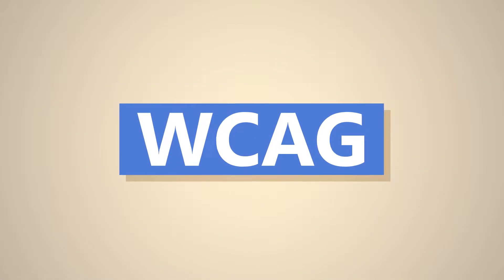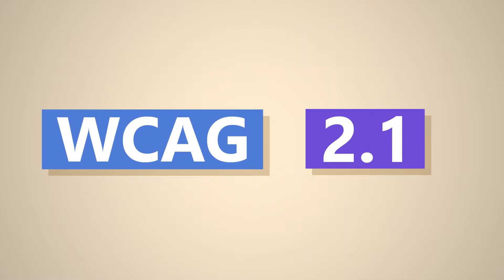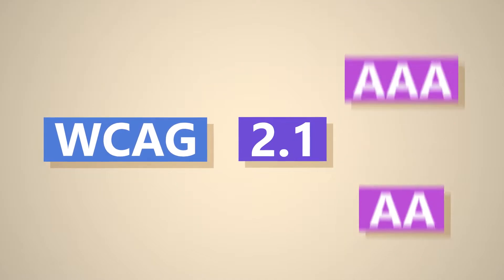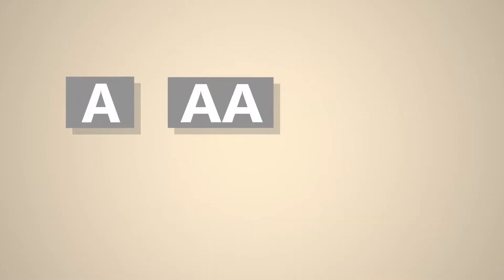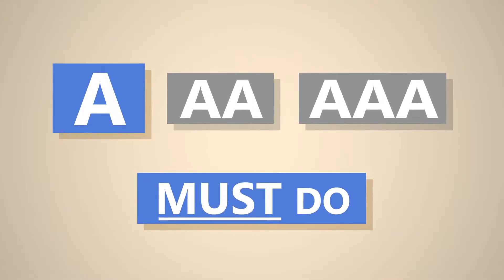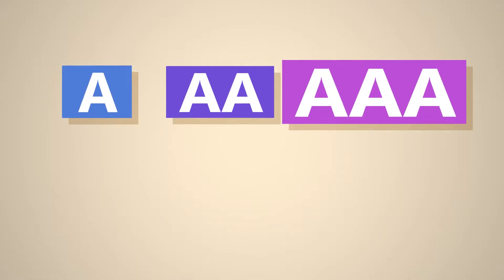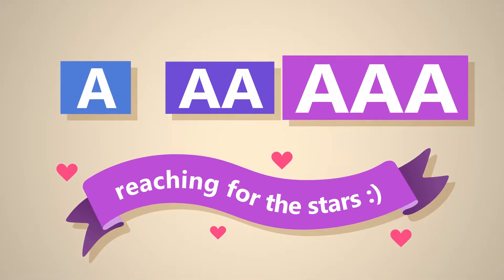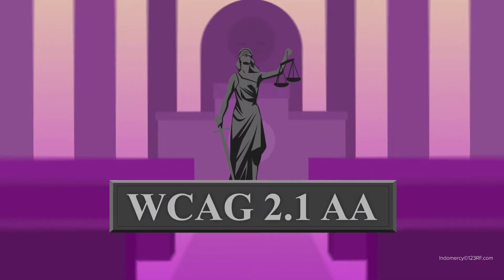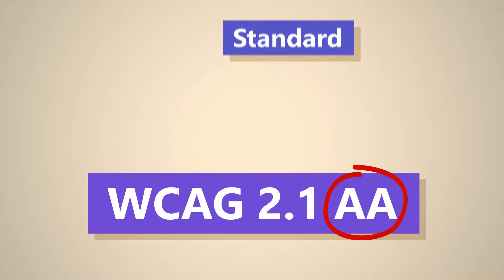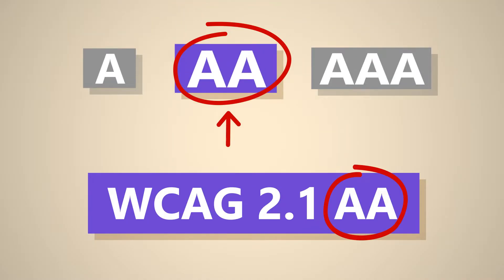WCAG has a standard, like 1.0 or 2.1, and a level that's A, AA, or AAA. Here at Silktide, we like to say that A is must do, AA is should do, and AAA is reaching for the stars. So when the legal requirement is WCAG 2.1 AA, it means it's using the latest standard, 2.1, and level AA — the middle one.